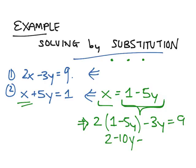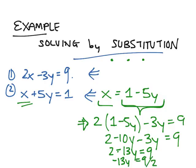That's 2 minus 10y minus 3y is equal to 9. So that's 2 minus 13y is equal to 9, which gives us minus 13y is equal to 9 minus 2, which is 7. So we've got y is equal to negative 7 over 13.